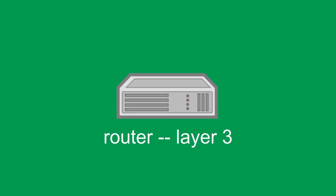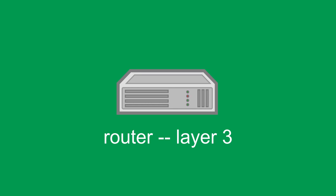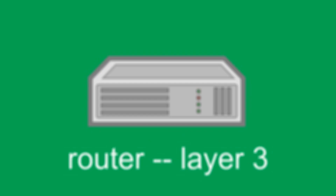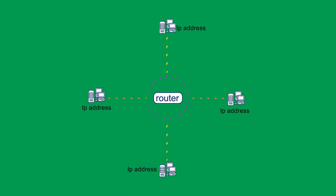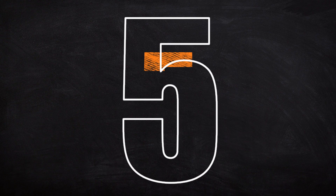Moving beyond the local area network, we enter the wide area network. Here it's not a matter of connecting devices together, but entire networks. WANs are considered a third, or internet, level for computer networks, and the router stands as one of its central components. With a router, multiple LANs are joined together, where devices' IP addresses are used for directing traffic on a much broader scale.